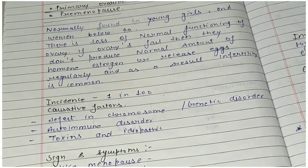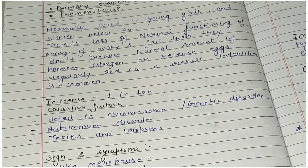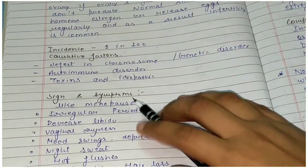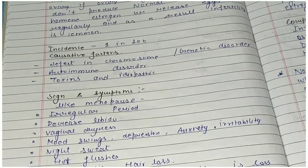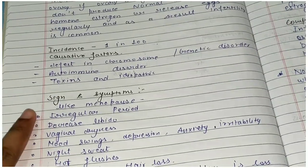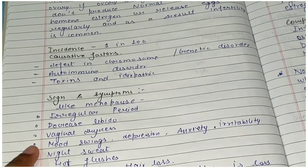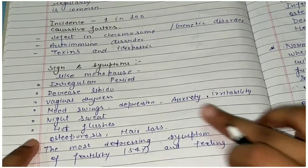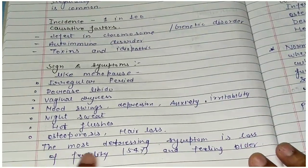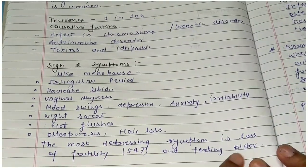Now the signs and symptoms of POF are like menopause, because it is called pre-menopause. Symptoms include irregular periods, decreased libido, vaginal dryness, mood swings, depression, anxiety, irritability, night sweats, hot flushes, osteoporosis, and hair loss.